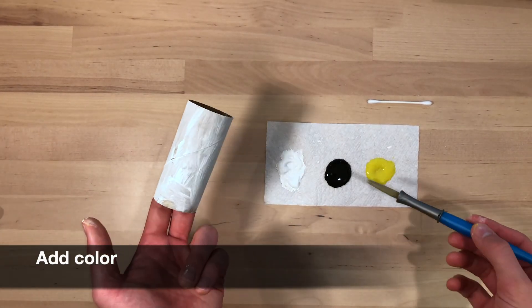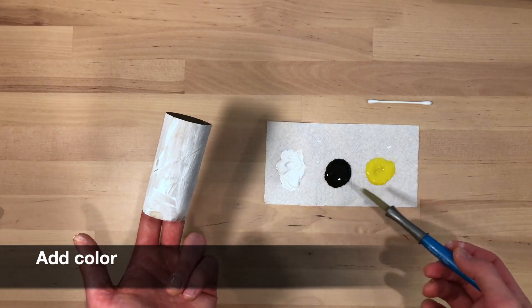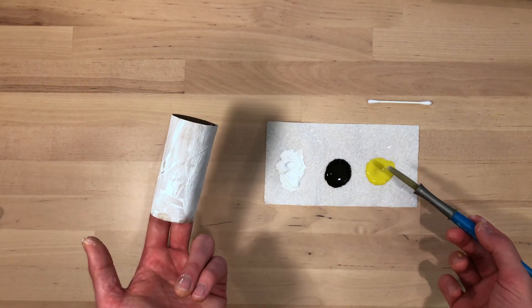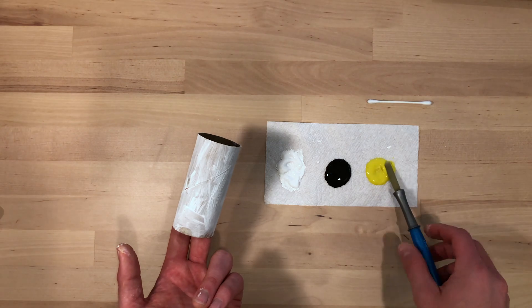Alright, now I'm going to add my second color. I've chosen yellow and black for the Kennesaw State University Owls. Hooty Hoo!